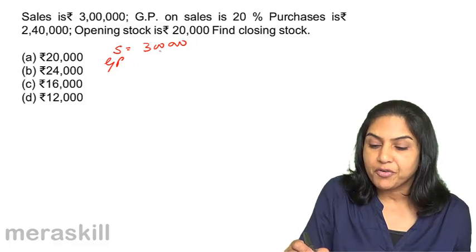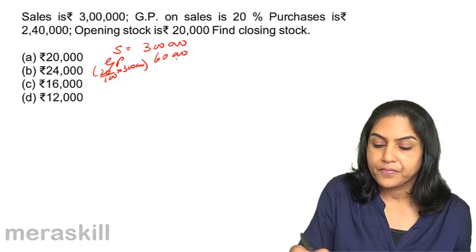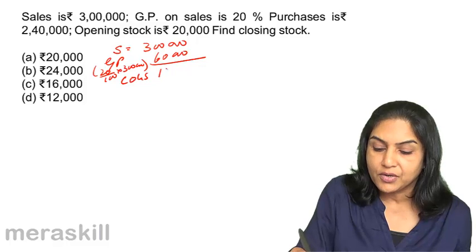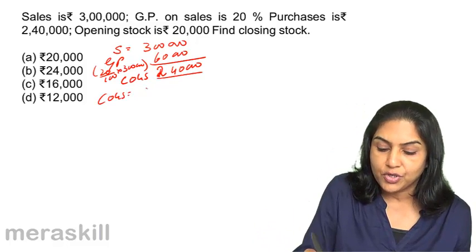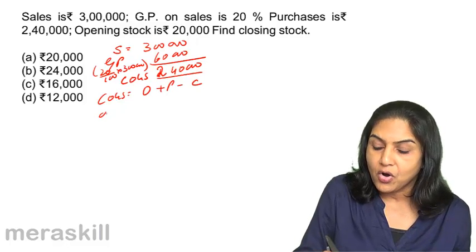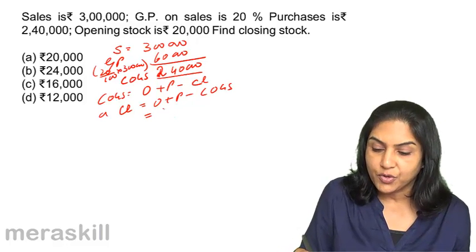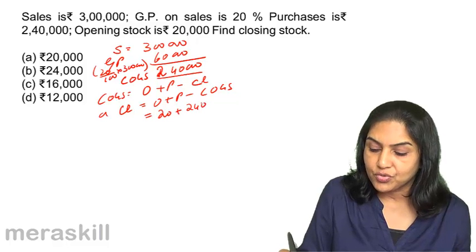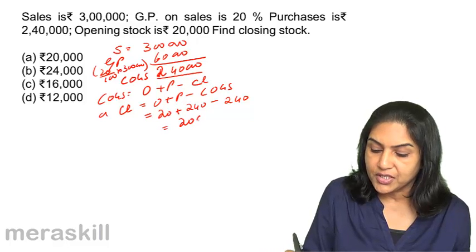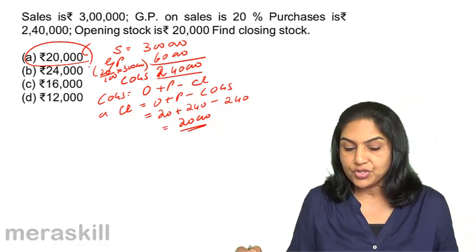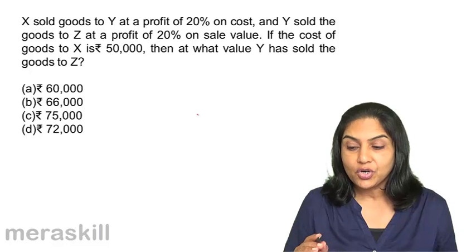Sales is 3 lakh, gross profit is 20% of 3 lakh, that is 60,000. So cost of goods sold is 2 lakh 40,000. Cost of goods sold equals opening stock plus purchases minus closing stock, so closing stock equals opening stock plus purchases minus cost of goods sold. Opening stock is 20,000, purchases is 2 lakh 40,000, minus cost of goods sold is also 2 lakh 40,000. Therefore closing stock is 20,000. The correct answer is a) 20,000.